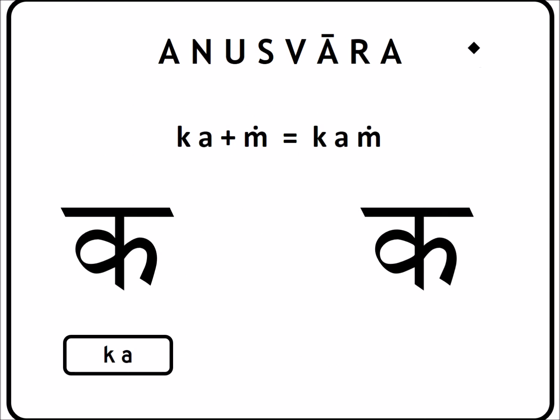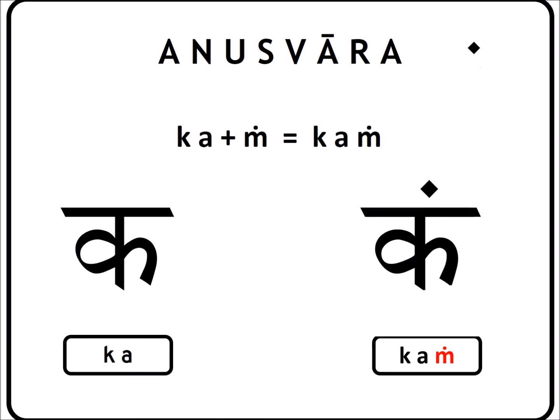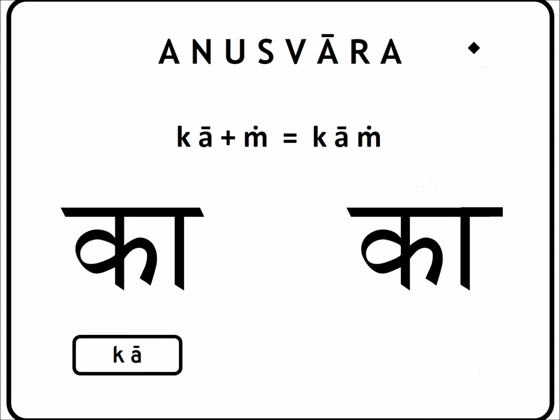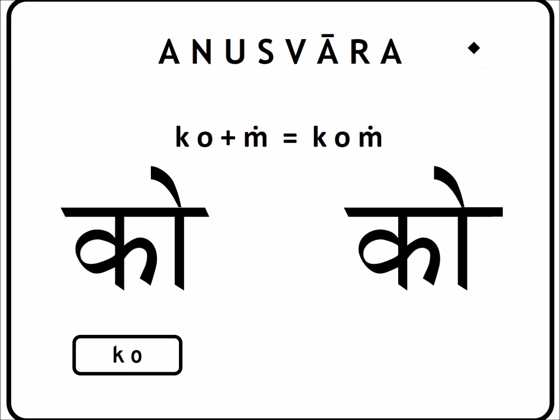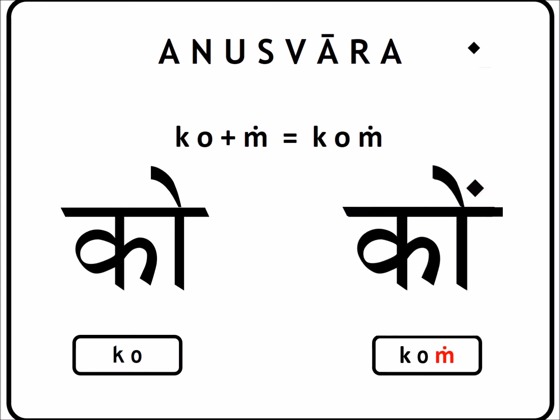So if we want to write Kaṃ, we take the letter Ka and draw a dot above the crossbar to get Kaṃ. If you want to write the syllable Kāṃ, we draw the letter Ka with the vertical line to the right to get Kā, then draw a dot on top of the vertical line to get Kāṃ. For Koṃ instead of Ko, you take the Ko shape — the vertical line with the line segment coming up is the O symbol — and draw the Anusvara dot above the vertical crossbar to get Koṃ.